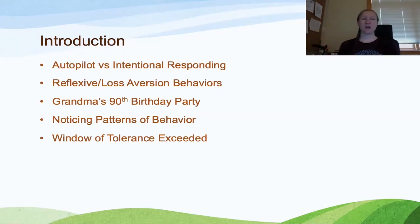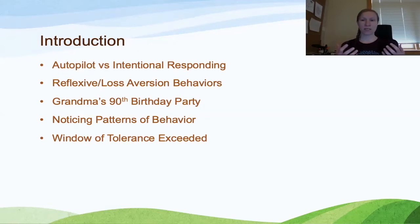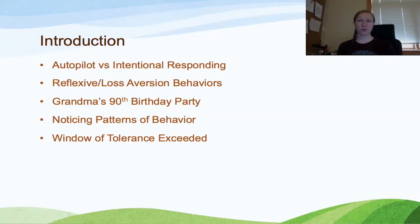We started to talk about this idea of our autopilot system, where our brains have evolved to be on autopilot most of the time and respond reflexively to environmental stimuli. We contrasted this to our intentional responding system, in which we engage more of our cognitive processes, our cortex, and our decision-making centers to override that autopilot system in order to make decisions that are more adaptive and appropriate to situations.